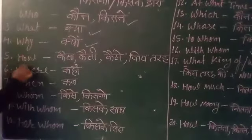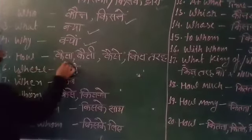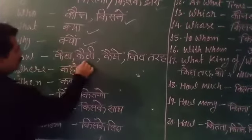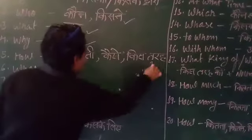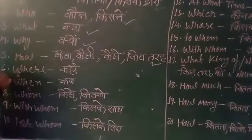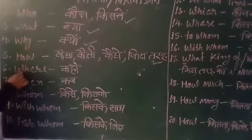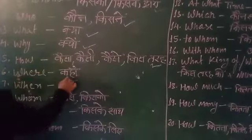The next word is 'How' — 'How' means Kaisa, Kaisi, Kistarah. Next is 'Where' — 'Where' means Kahan.